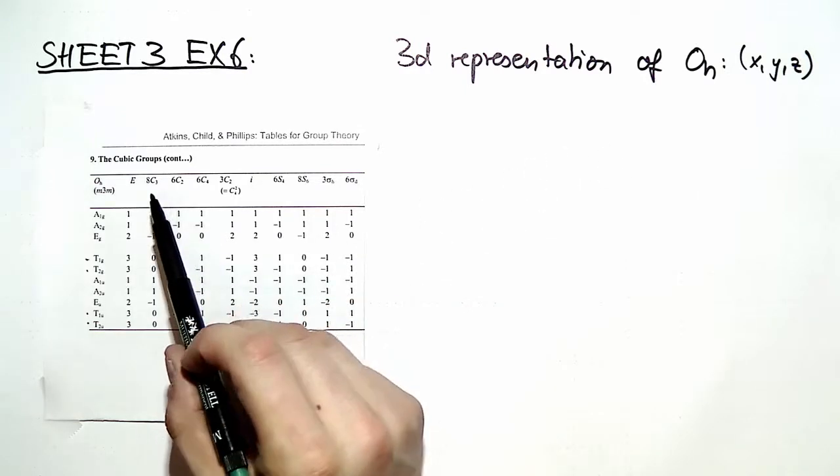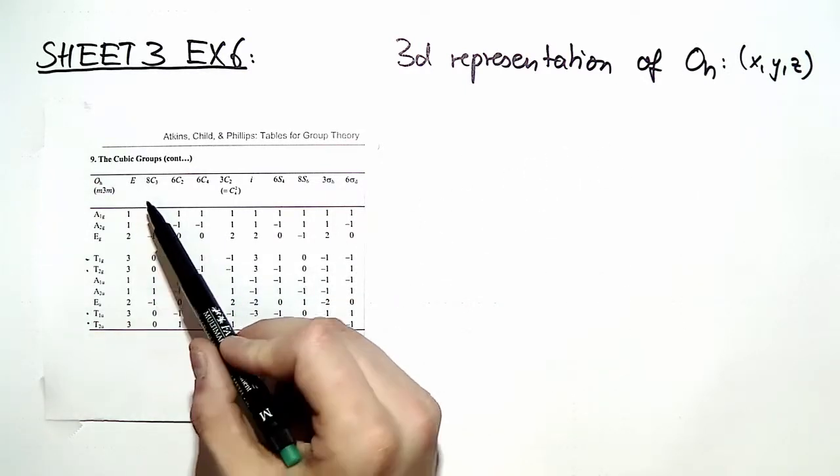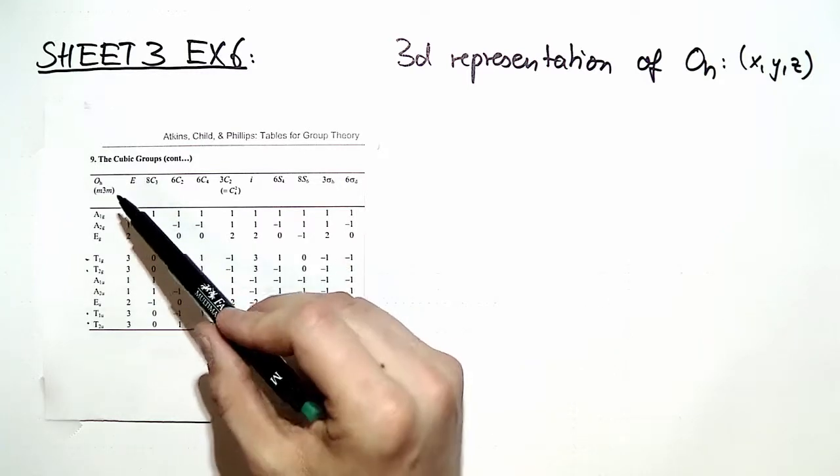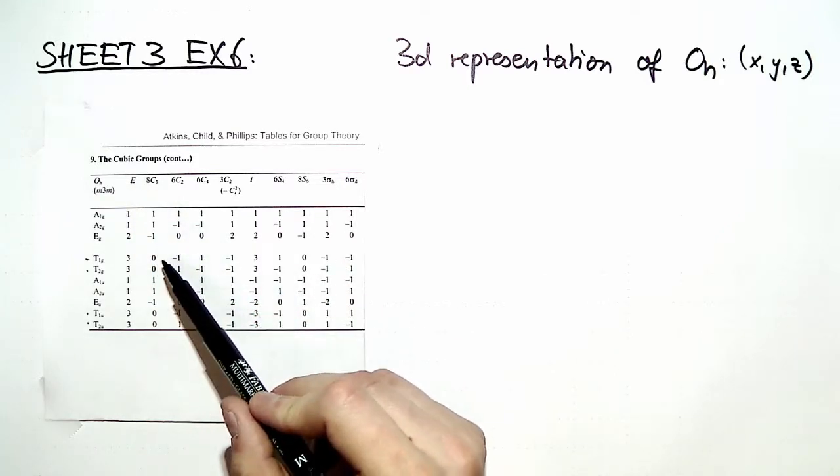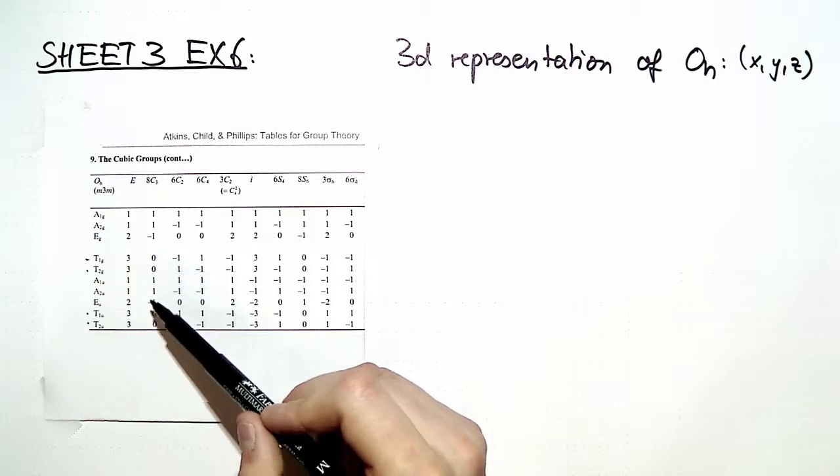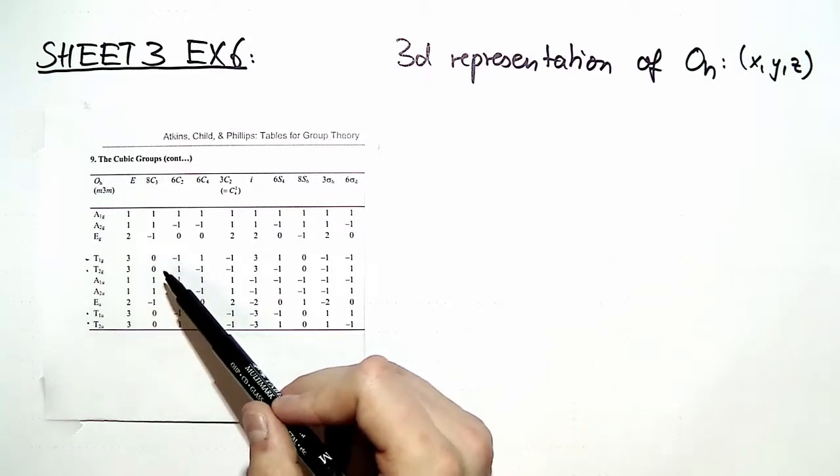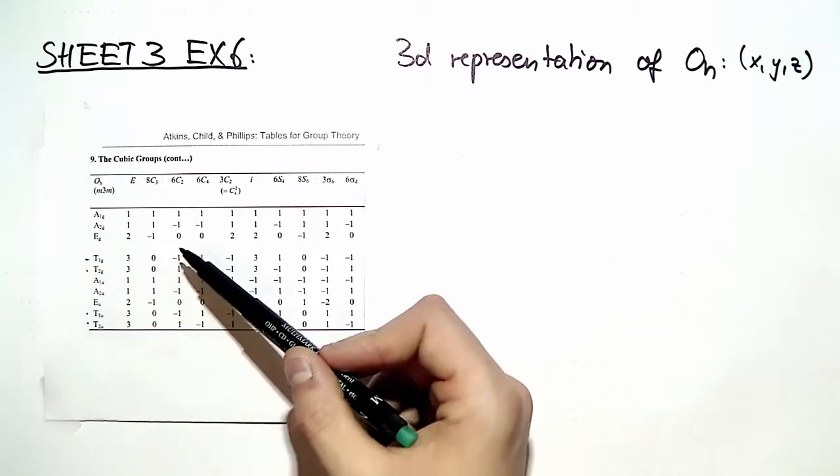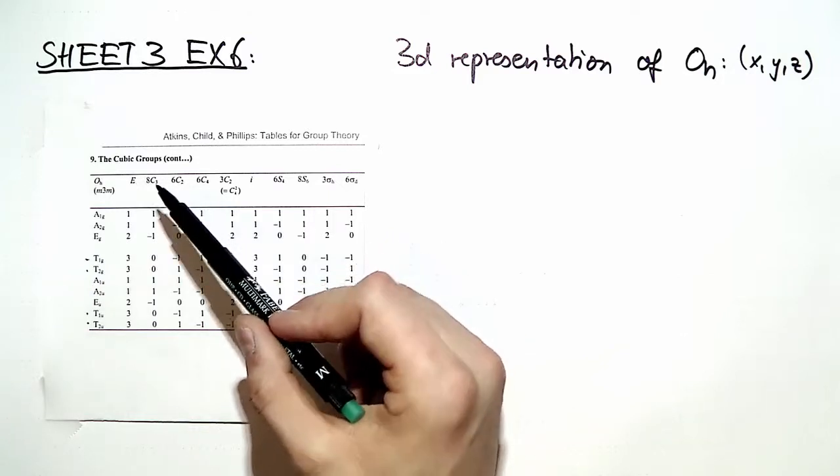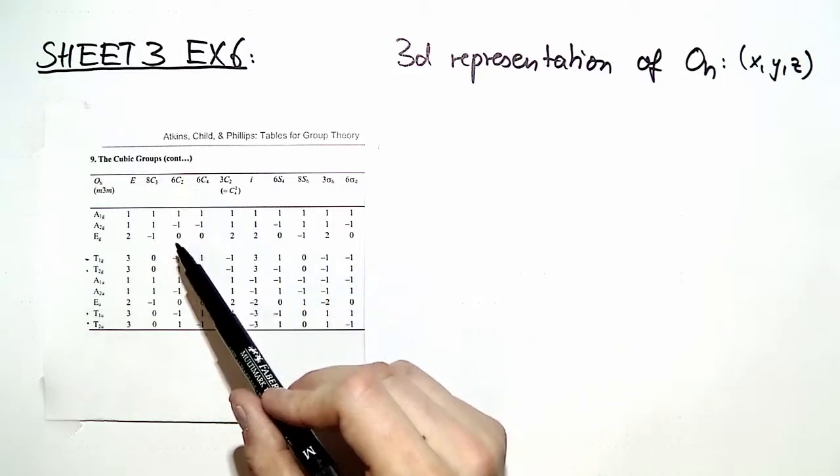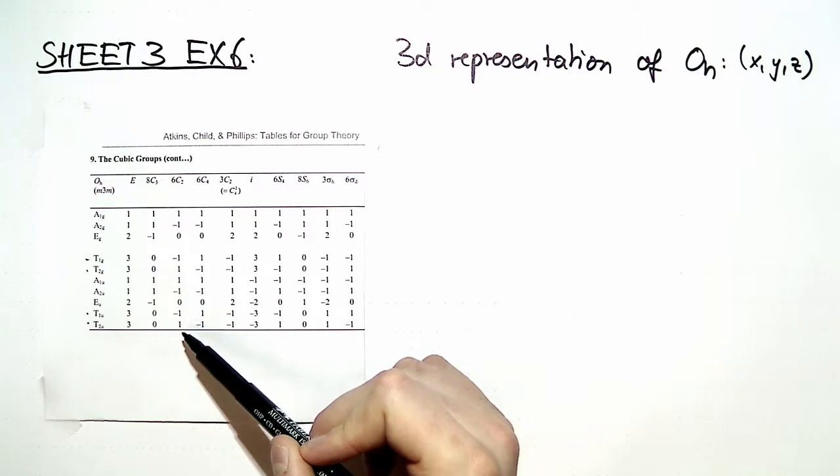First, we know that the threefold rotation, evaluating the character of the threefold rotation, wouldn't yield any useful information for us because the character is the same for all four representations. So we proceed by evaluating the character for the twofold rotation because there is a difference in the characters right here.